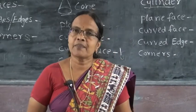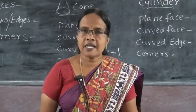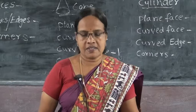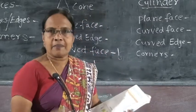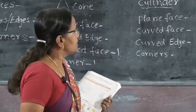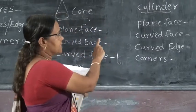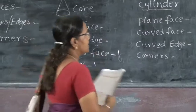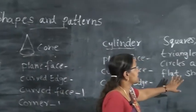Good morning children. In the previous class you had studied shapes and patterns. Once again I repeat the class. Squares, rectangles, triangles and circles are called flat shapes.